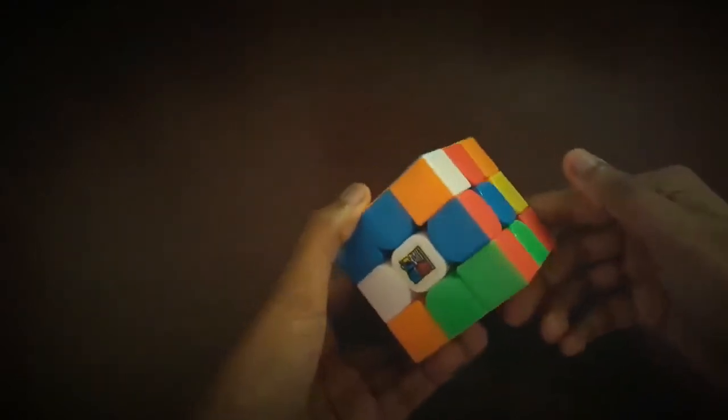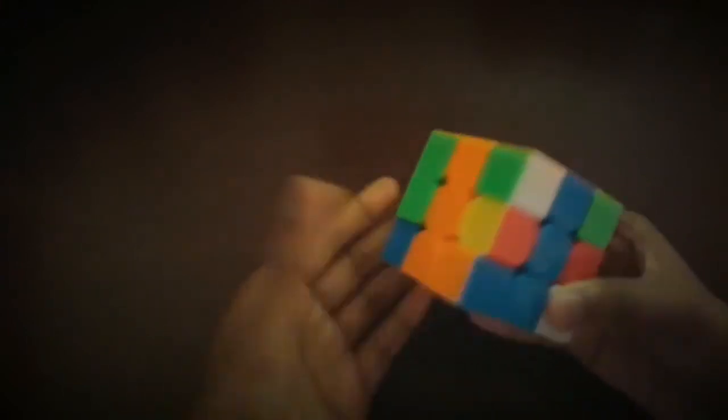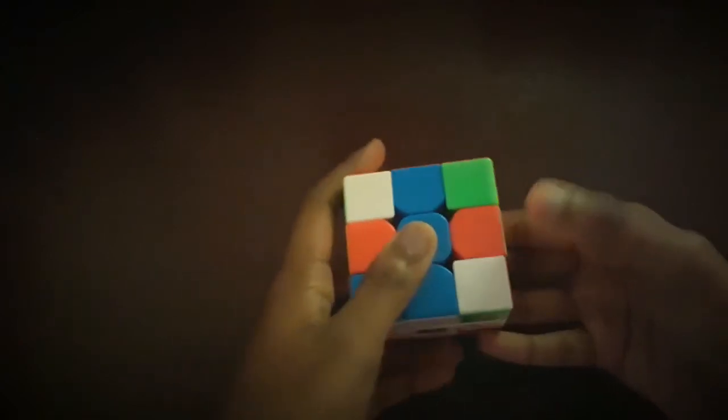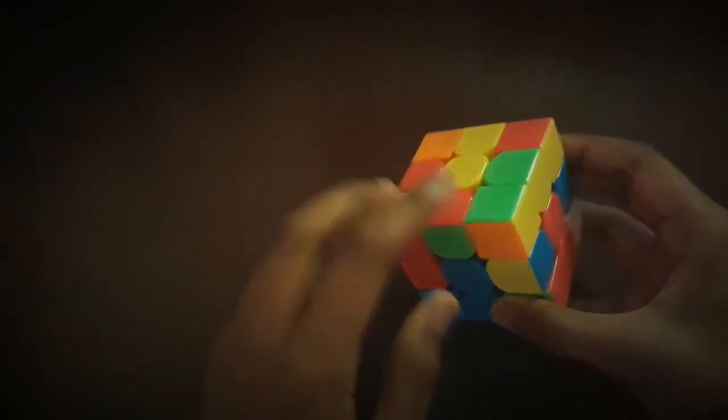So starting with the first walkthrough solve, I'm going to do the cross right now and then the F2L after. Now I'm done with the cross and the first pair I see is the red and green pair. I'm going to take that out and bring it into the top layer and separate them.